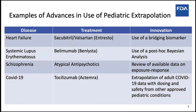Finally, for COVID-19 — although this is an emergency use authorization rather than an approval — data on tocilizumab (Actemra) already collected in other approved pediatric indications, including systemic and polyarticular juvenile idiopathic arthritis, supported the dose and exposure for short-term treatment in COVID-19. This allowed the division of rheumatology and transplant medicine to provide the emergency use authorization for Actemra in COVID-19 all the way down to two years of age.